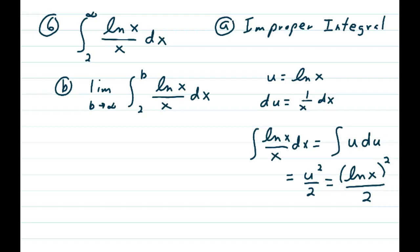Problem 6, an improper integral from 2 to infinity of the natural log of x over x dx, and this is going back to section 8.8 in our book, so it's an improper integral. That's part a.